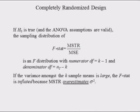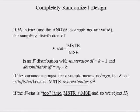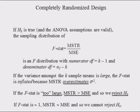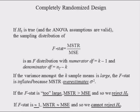Hence, if the F-stat is too large, MSTR due to treatments is larger than MSE due to error, and so we have to reject the null hypothesis that all population means are equal. Also, if the F-stat is approximately equal to 1, MSTR due to treatments is approximately equal to MSE due to error, and so we cannot reject the null hypothesis that all population means are equal.